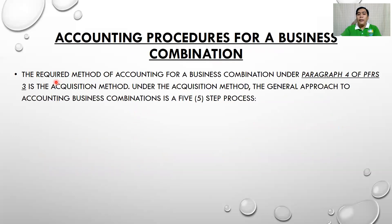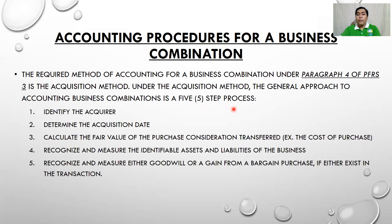Under PFRS 3 paragraph 4, the required method of accounting for a business combination is the acquisition method. There is no other standard that manages business combination. Under the acquisition method, the general approach is a five-step process. Step one: we need to first identify the acquirer. From the two companies given in a problem, we need to determine who is the acquirer.